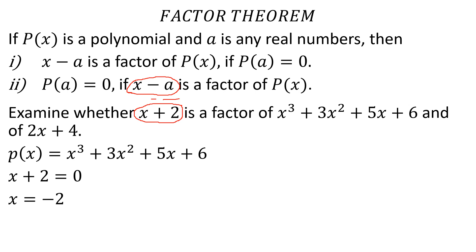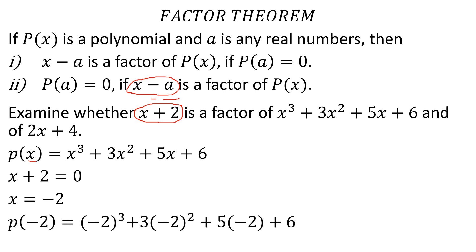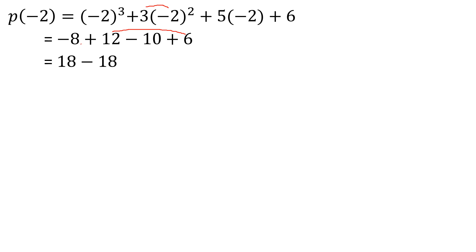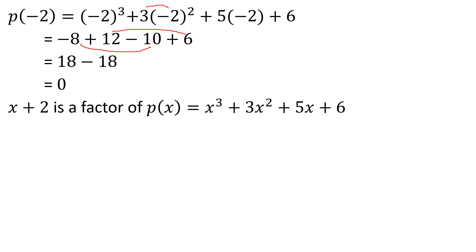Substituting: P(-2) = (-2)³ + 3(-2)² + 5(-2) + 6 = -8 + 12 - 10 + 6 = 0. Since P(A) equals 0, x plus 2 is a factor of P(x).